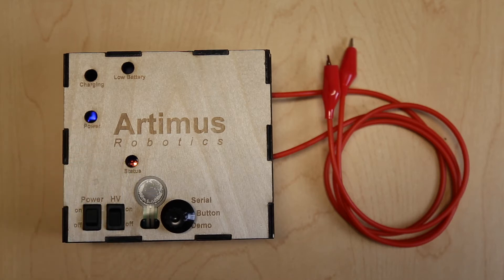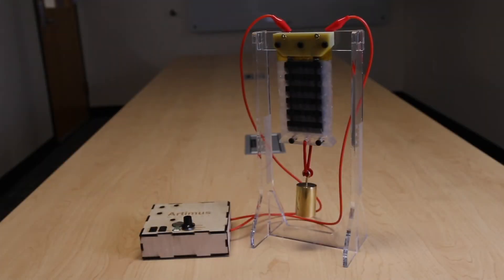With only the power switch engaged, the power supply is still incapable of producing high voltage until the redundant high voltage switch is also engaged. When ready to activate your Hazel Actuators, turn on the high voltage switch.